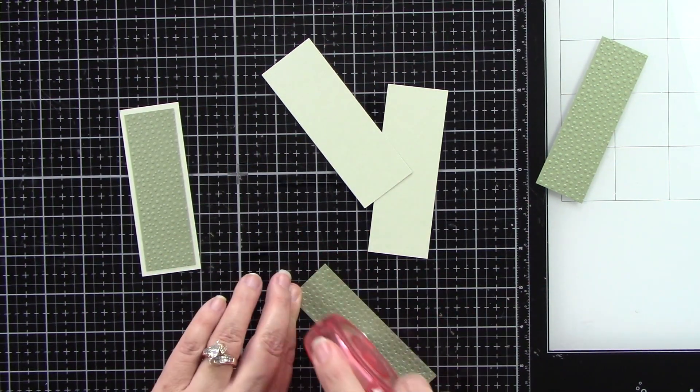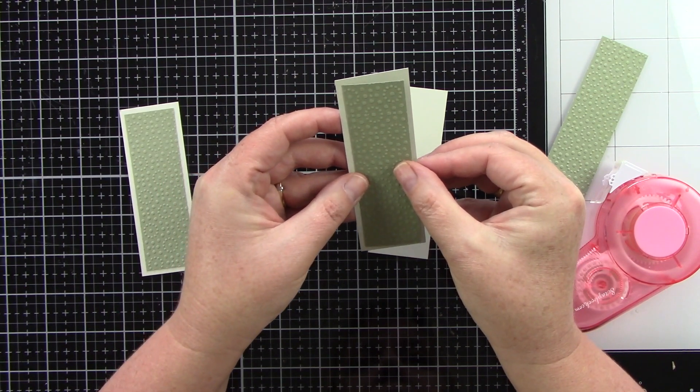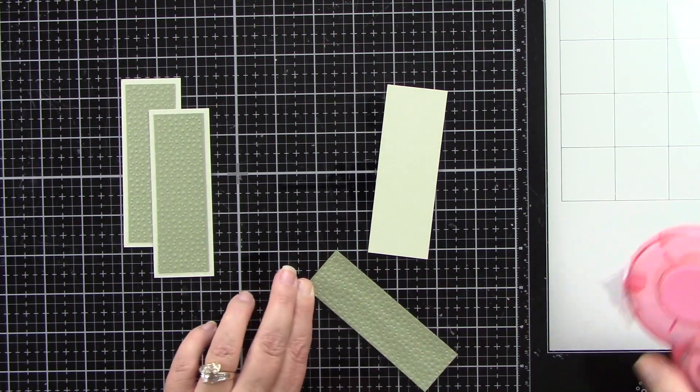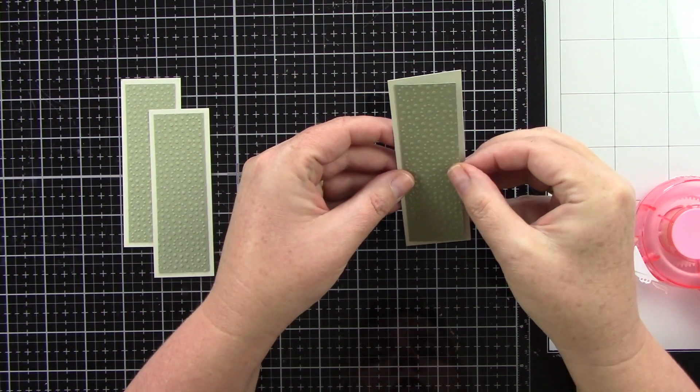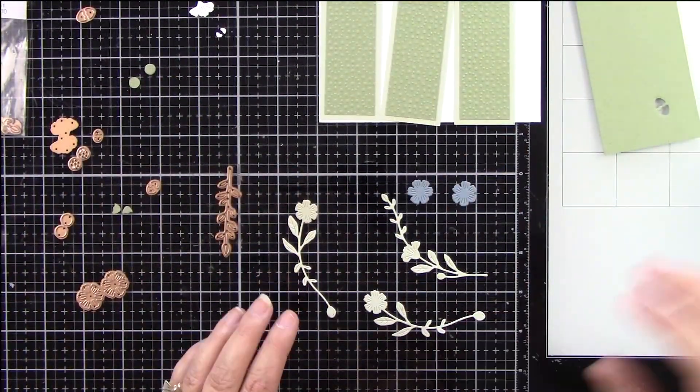So I'm going to adhere these together and when I'm making these panel cards I really do like to have a mat behind it because I think it makes it stand out even better. I just like the way that looks having a mat behind each one of these panels.